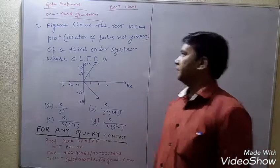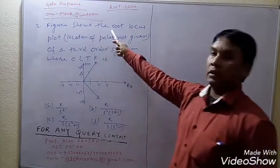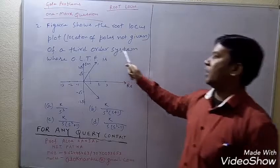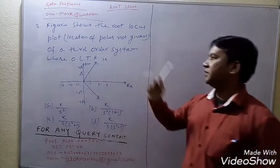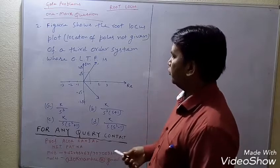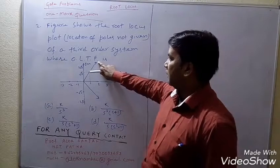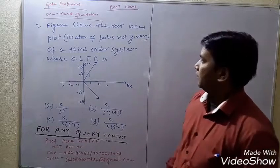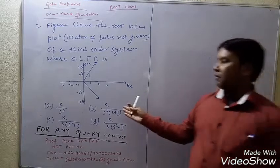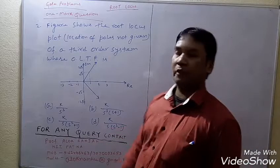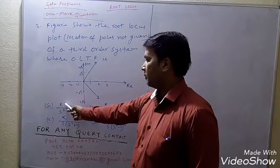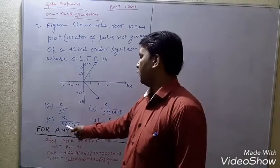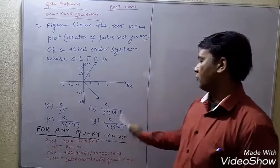Now the second question: the figure shows the root locus plot of a third order system. The OLTF is to be determined. The root locus is given, and the problem asks about the open loop transfer function. The four options are: A) K/s², B) K/s²(s+3), C) K/s(s²+1), D) K/s(s²-1).